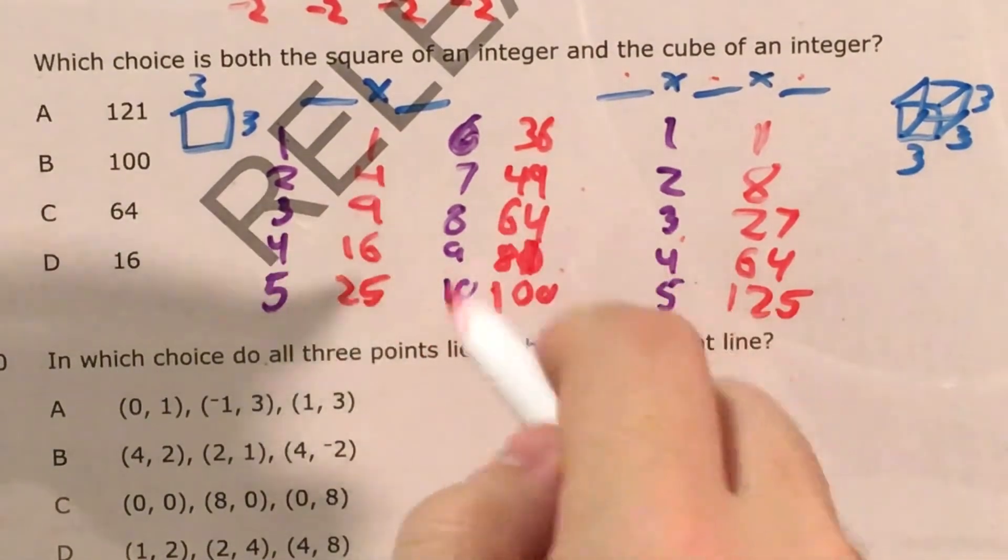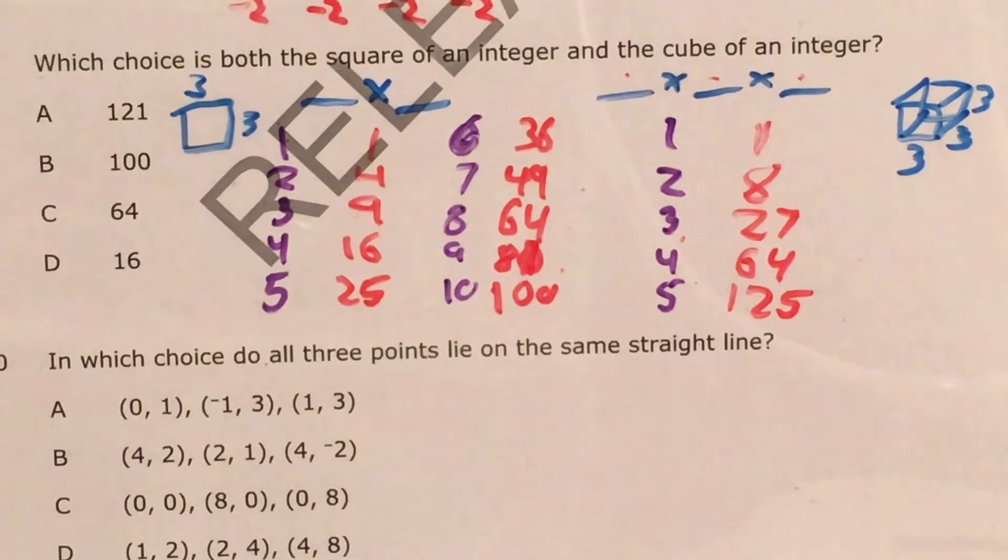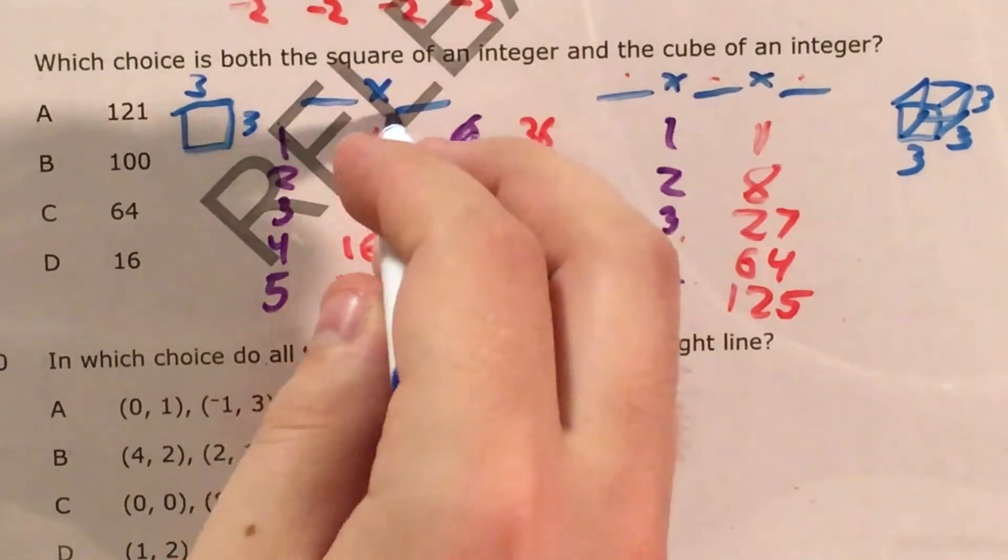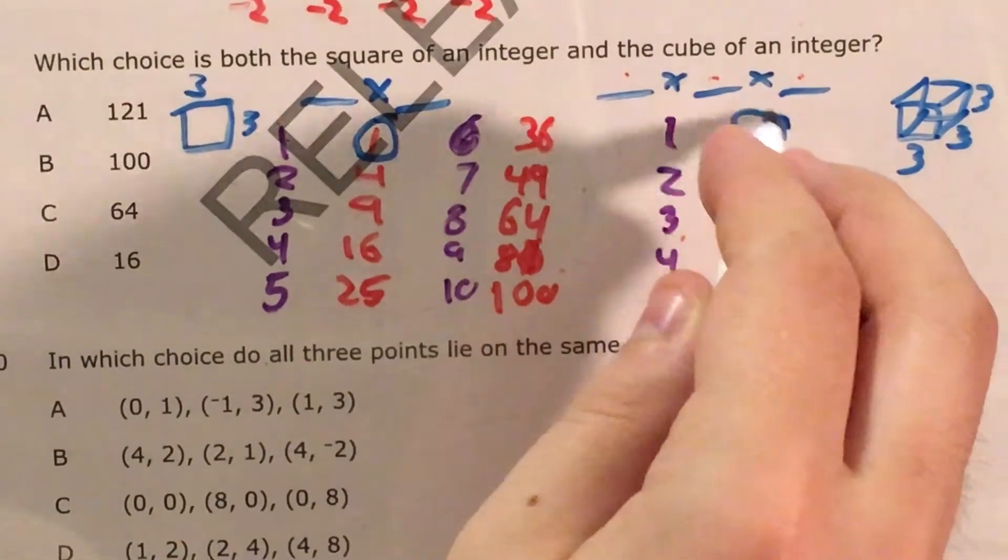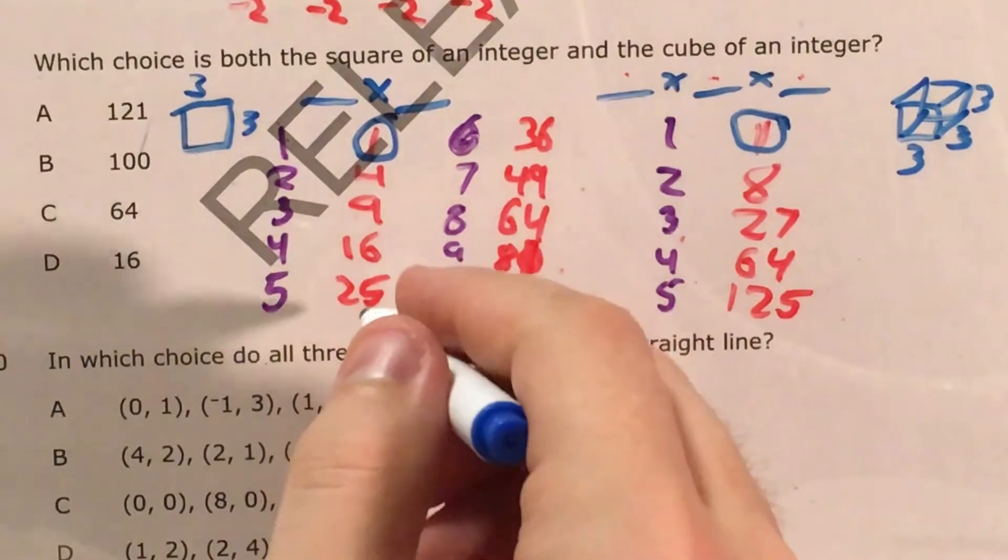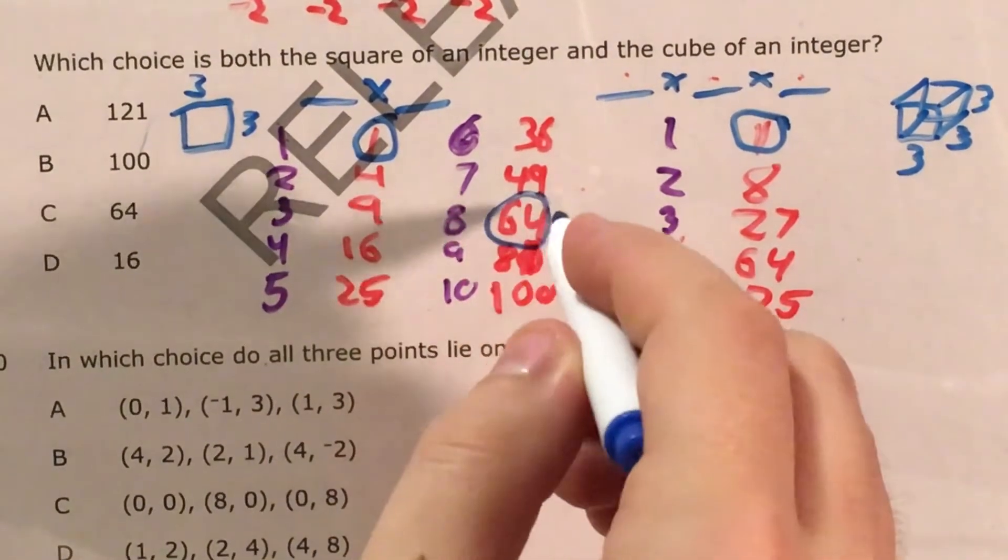So now that I have some square numbers and some cube numbers, I just need to figure out if any of my answer choices shows up in both my square numbers and my cube numbers. Oh, well, here's one already. One is a square number and one is a cube number, but it's not one of our answer choices.